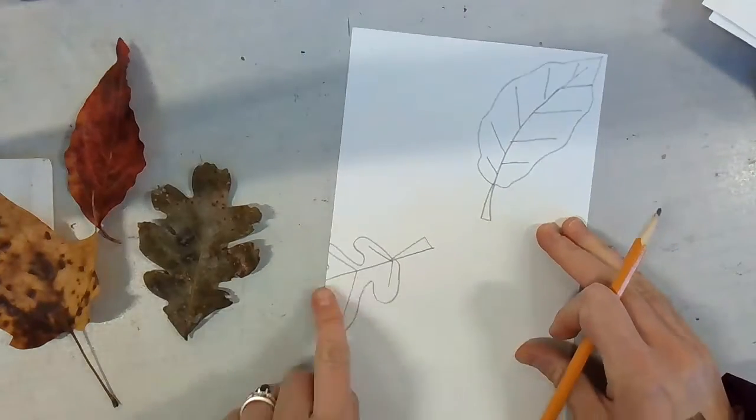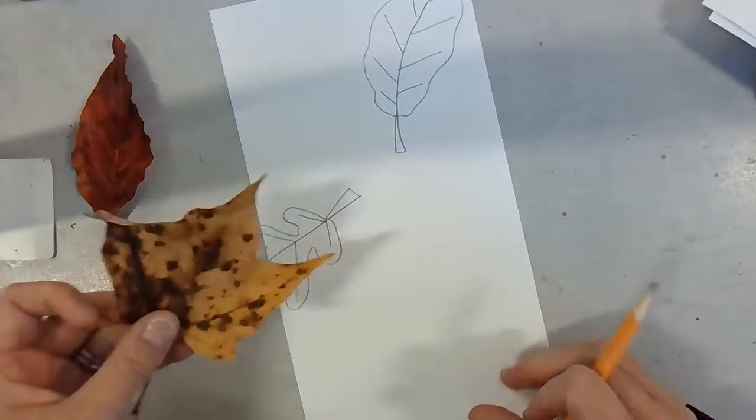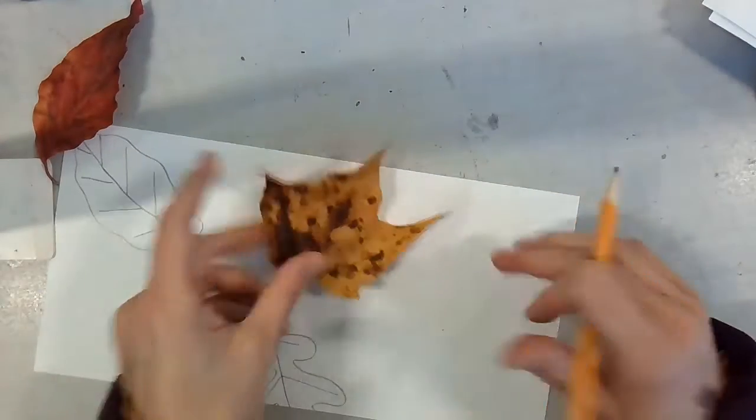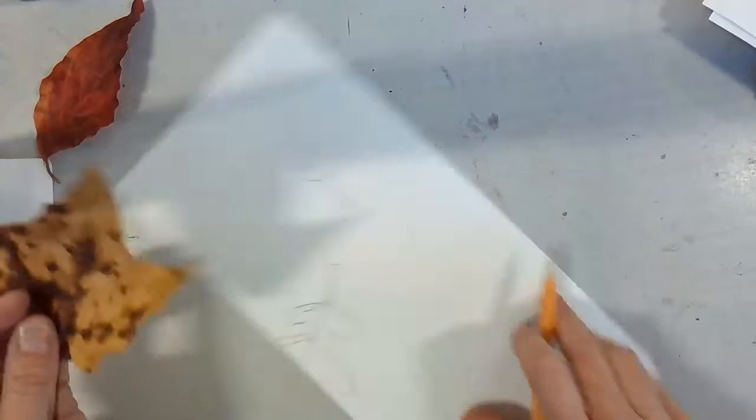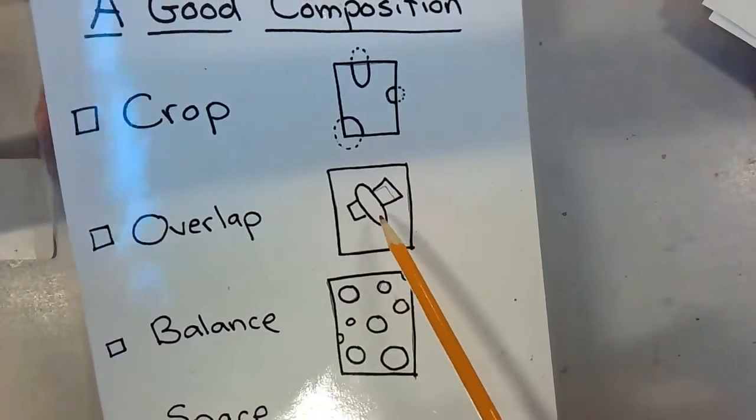Okay, there. I've got one leaf cropped off the paper. All right, now let's see. I could try overlapping, or I could crop something else. Yeah, I'm going to go with overlapping.